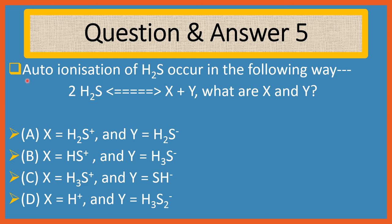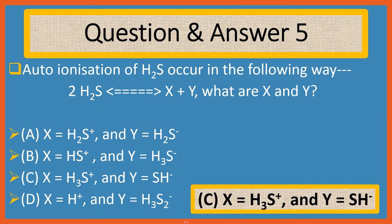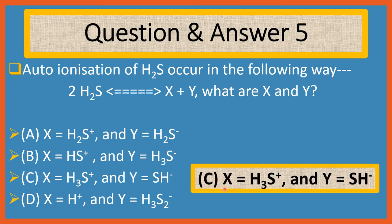Question 5. Auto-ionization of H2S occurs in the following way: 2H2S transfers to X plus Y. What are X and Y? Choices are: A. X = H2S+ and Y = H2S-, B. X = HS+ and Y = H3S-, C. X = H3S+ and Y = SH-, D. X = H+ and Y = H3S2-. Answer is C: X = H3S+ and Y = SH-.